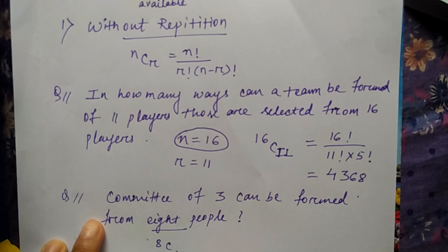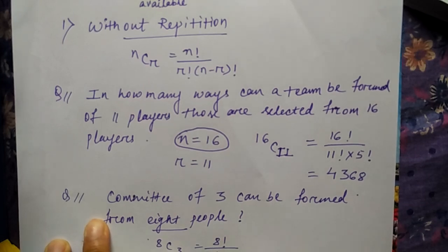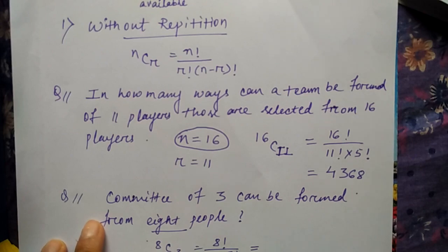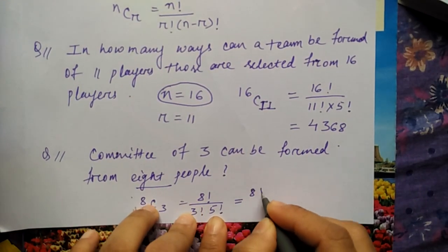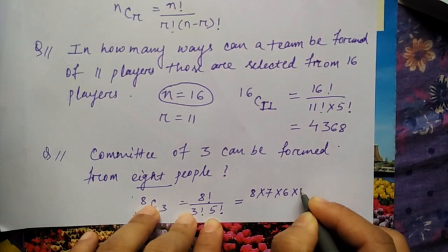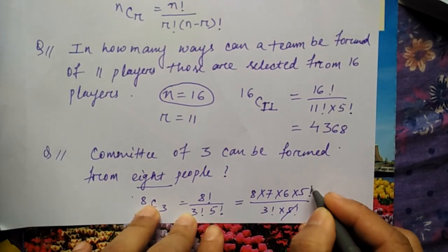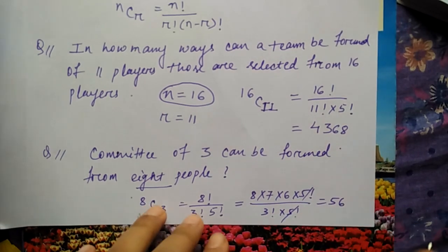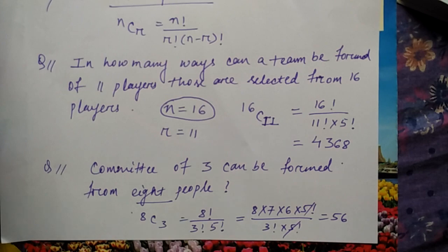So 8C3, that is 8 factorial by 3 factorial into 5 factorial. If you calculate the value, then it will be 8×7×6×5 factorial divided by 3 factorial into 5 factorial. You can cancel and you'll be getting the value 56 that I have calculated already. Then we'll see some different example. This is an easy example, I told you we'll see some other one.